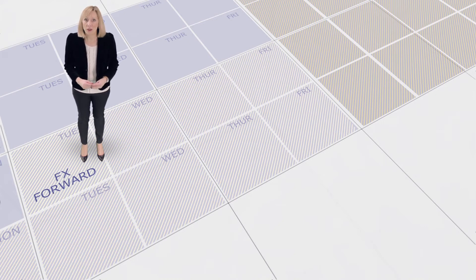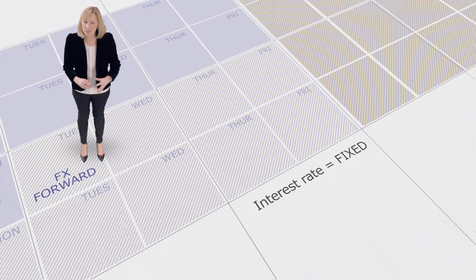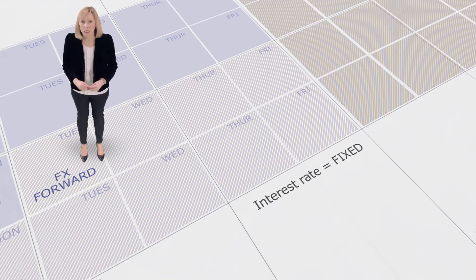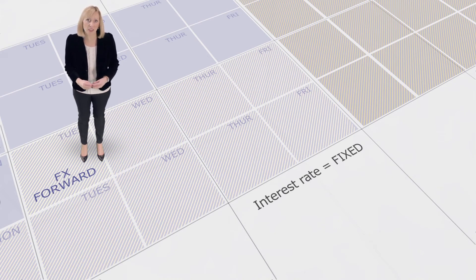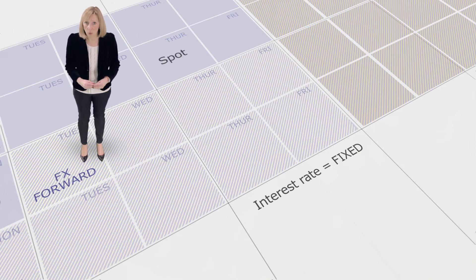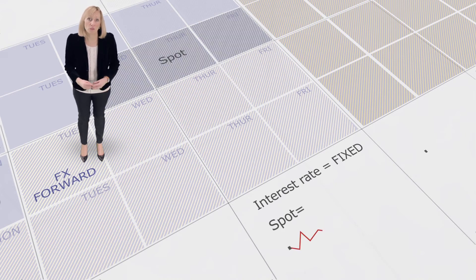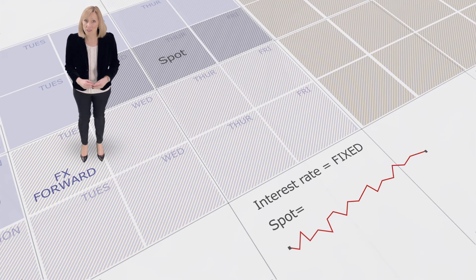With a forward, the interest rate differential between the two currency pairs traded for the chosen time horizon of your trade is fixed and included in your price at the time of trading. This means that your profit or loss will not be influenced by any potential changes in interest rates during the period in which you hold the position. In contrast, if you'd kept a spot position, the interest rate differential could vary from day to day and would be reflected through the overnight roll of the trade until closed.